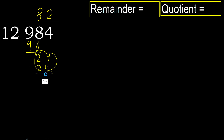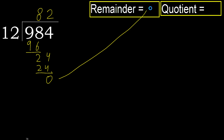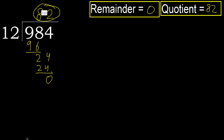Okay. Subtract. Next, there is no number remaining, therefore finish it. Remainder is 0. Therefore, 984 divided by 12 is 82.